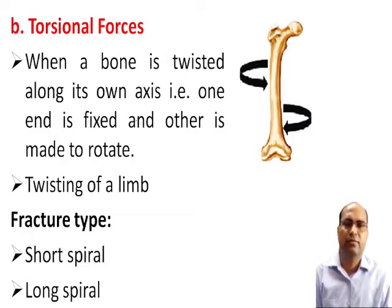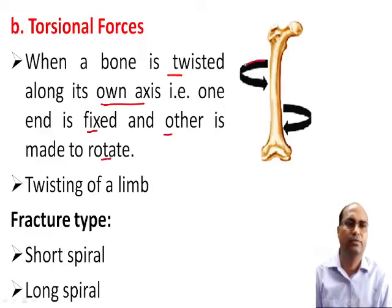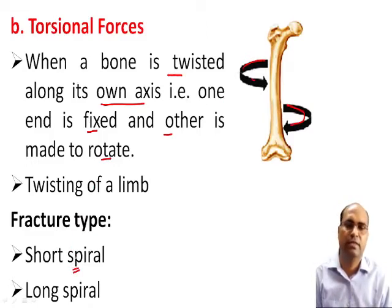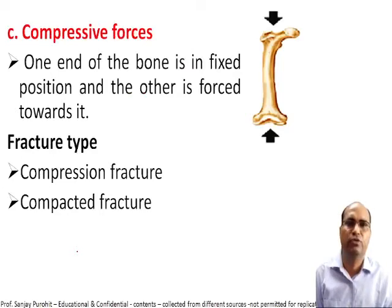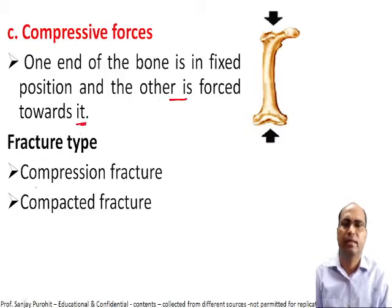Torsional forces occur when a bone is twisted along its own axis — one end is fixed and the other end is made to rotate. Twisting of the limbs causes this. The fracture type under torsional forces is spiral, which may be a short spiral or long spiral fracture. Compressive forces occur when one end of the bone is fixed and the other is forced toward it, resulting in compression fracture or compacted fracture.